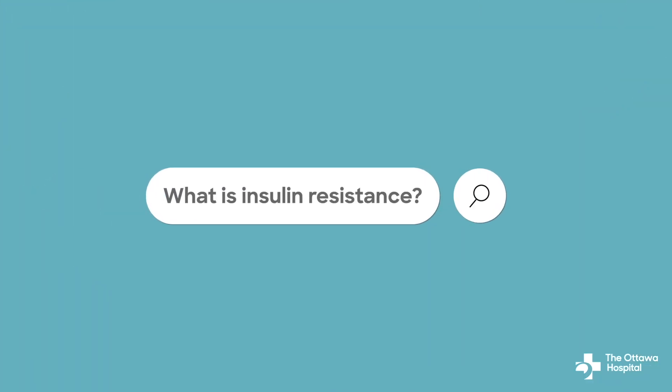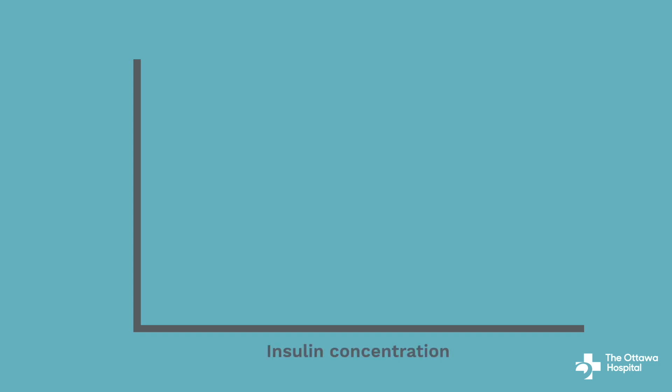Let's start by defining insulin resistance. In humans, insulin is a peptide hormone produced by the pancreas. Via the bloodstream, insulin circulates throughout the body and is the main hormone controlling blood glucose sugar levels. In this figure, the horizontal axis is a measure of insulin concentration which increases as we move from left to right. The vertical axis is a measure of body glucose metabolism or disposal which increases as we move from bottom to top.